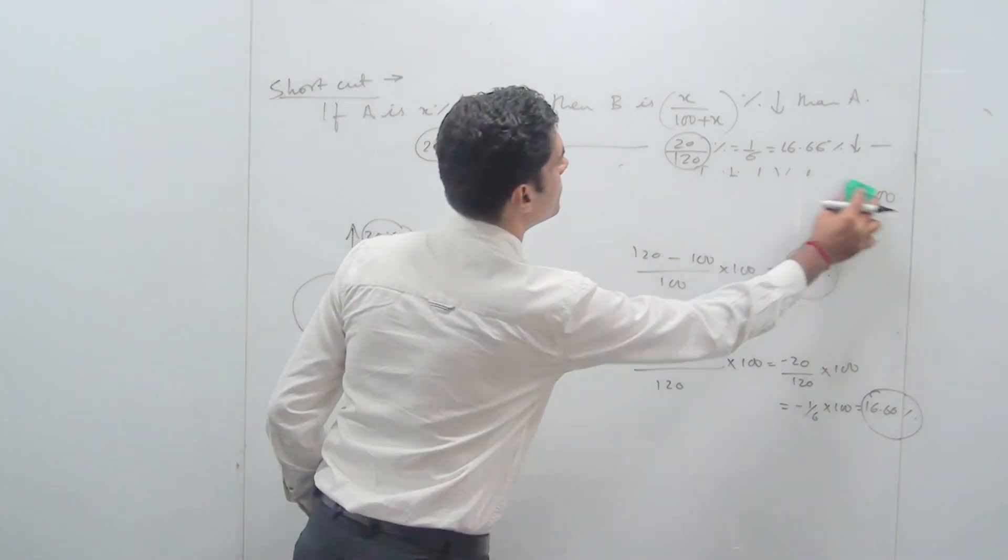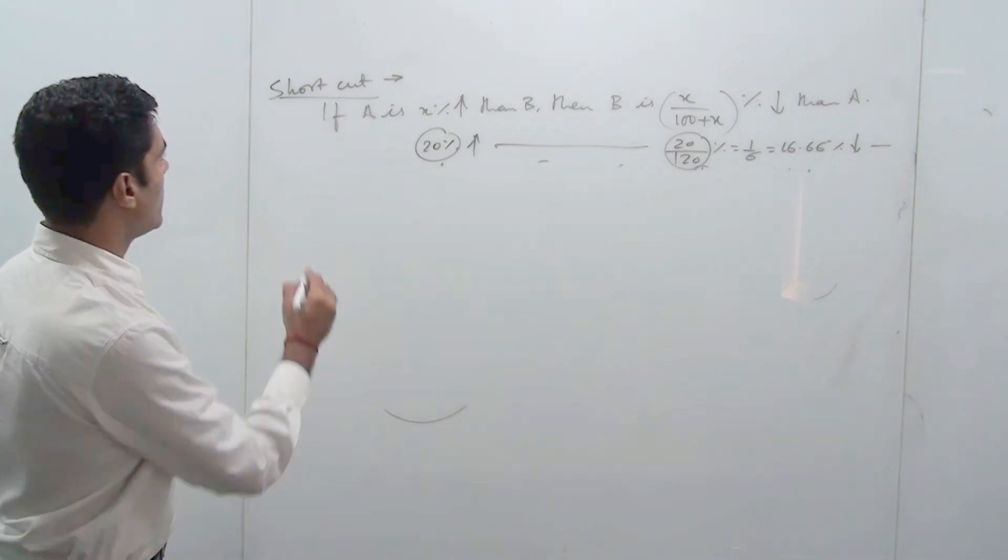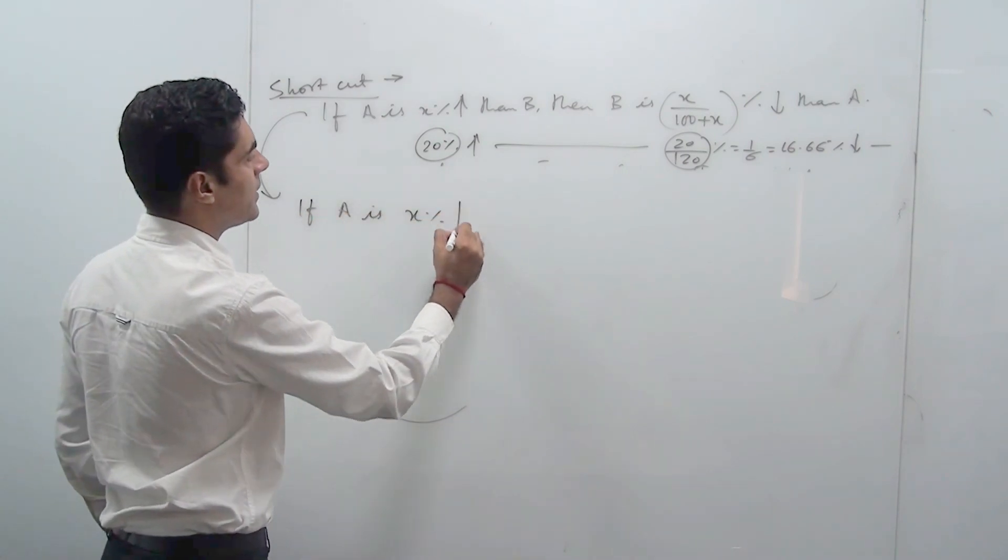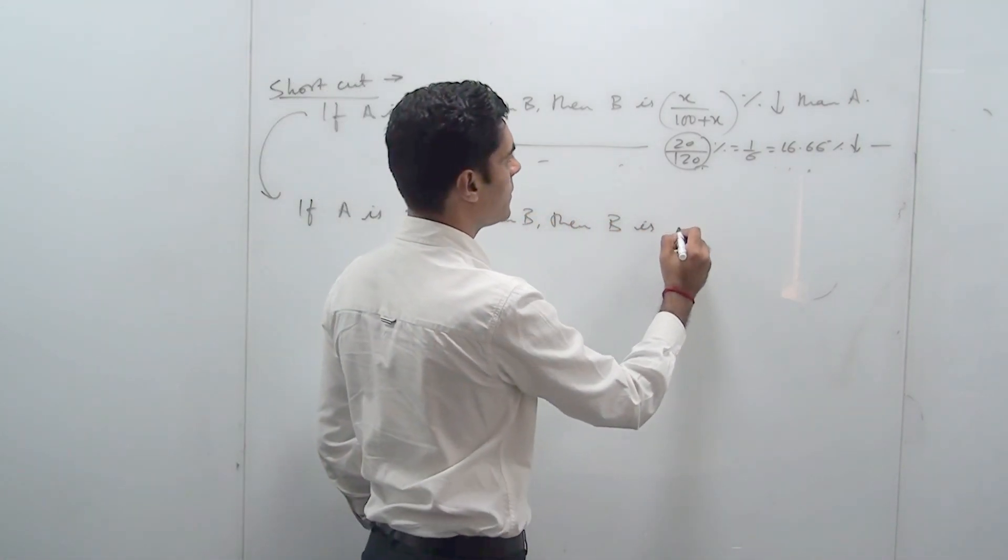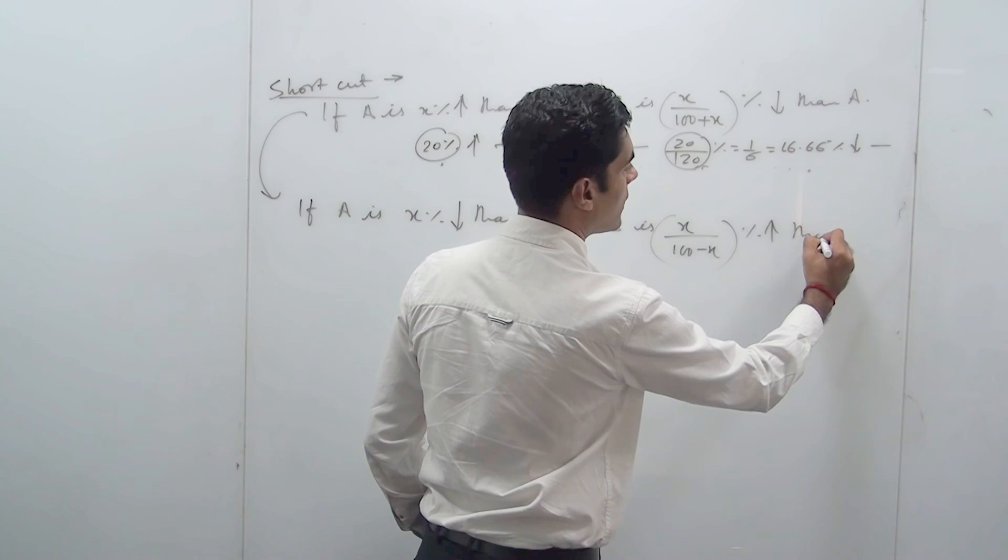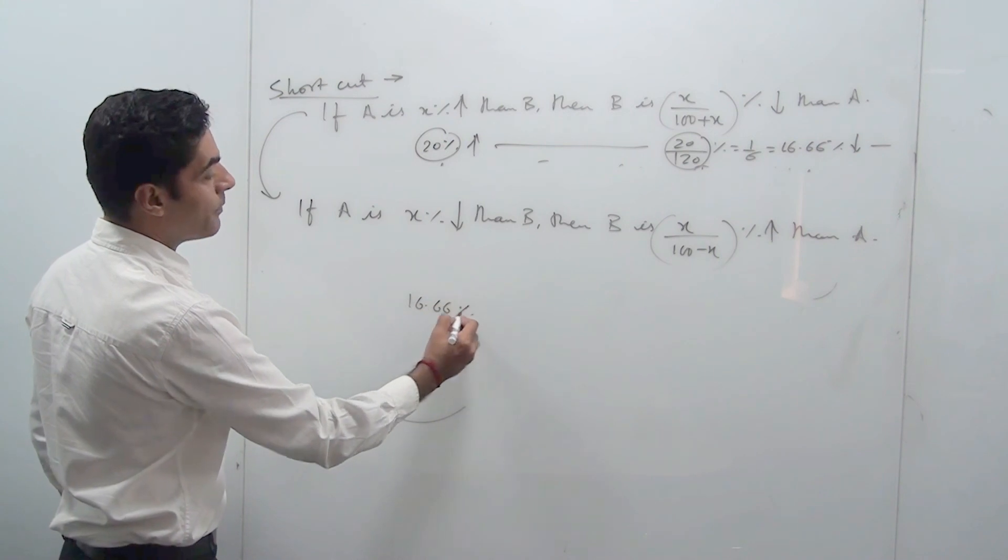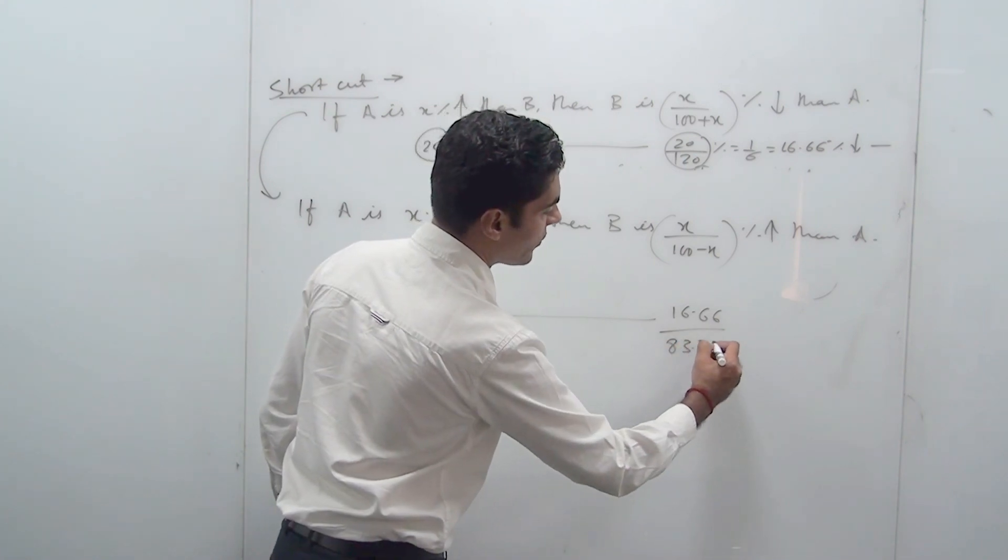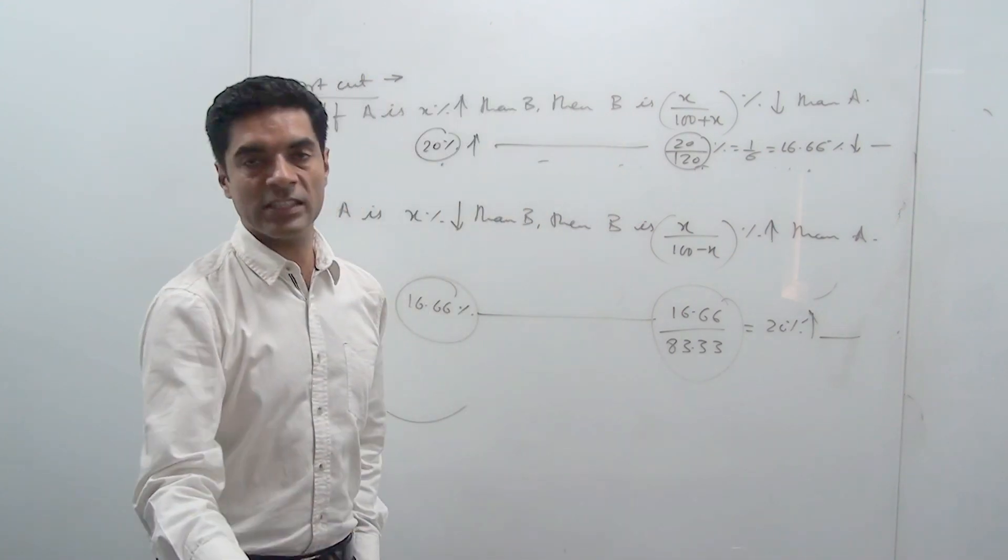Another important thing is the vice versa of this. If A is x percent less than B, then B will be x upon 100 minus x percent more than A. Like in our case, if B was 16.66% less, then A would have been 16.66 divided by 83.33. If you solve this, this will come out to be 20%. So this is a direct formula.